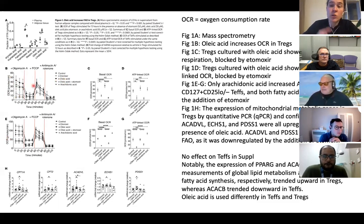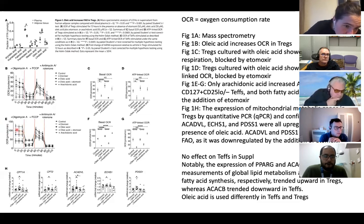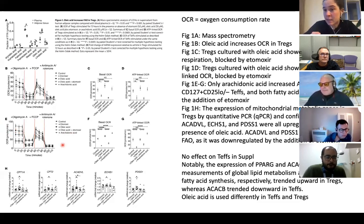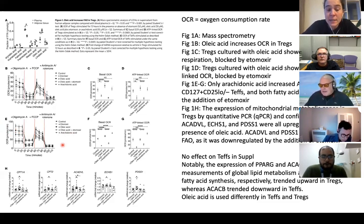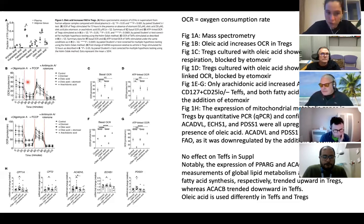Interestingly, they found differences between T regulatory and T effector cells. In effector T cells, it was arachidonic acid — not oleic acid — that generated the highest use of beta oxidation. This was used to demonstrate metabolic differences between effector and regulatory T cells.